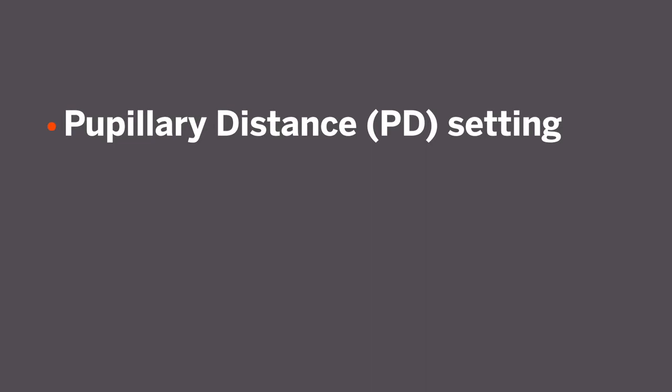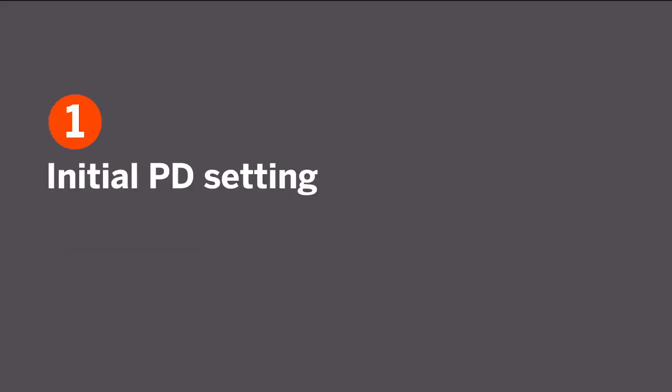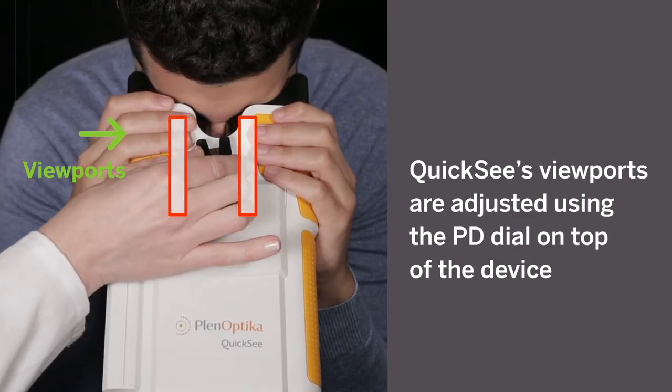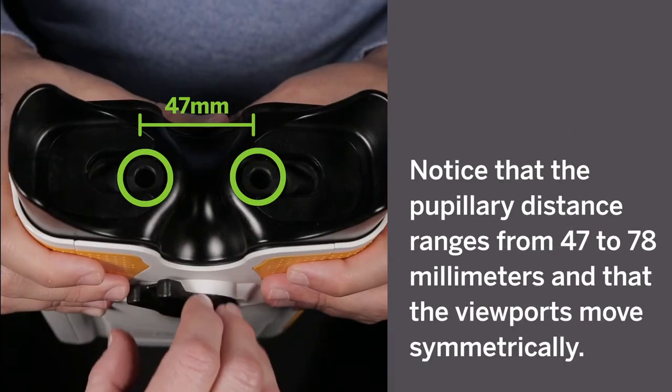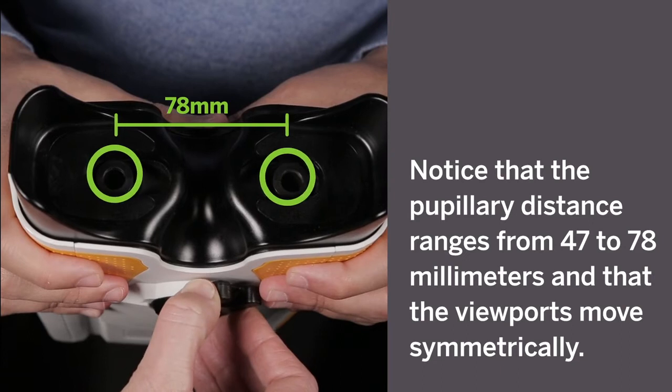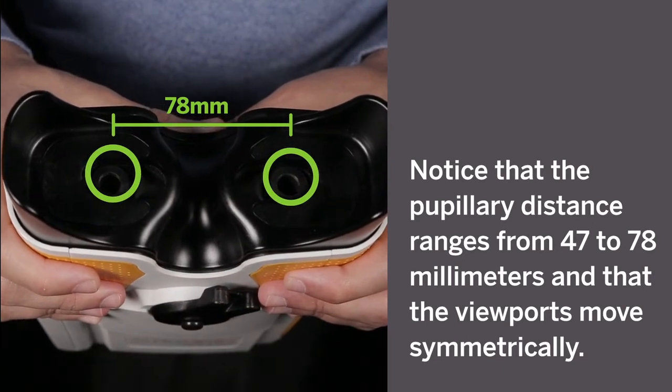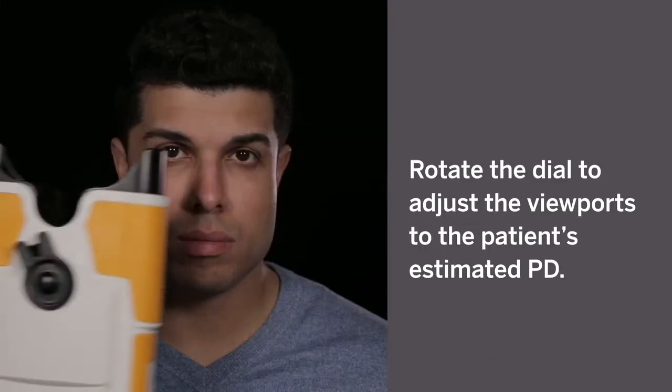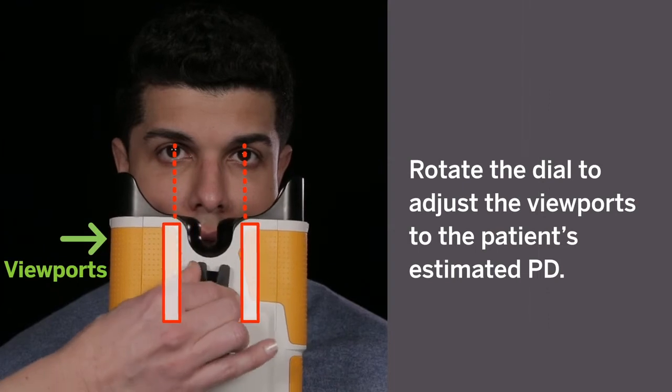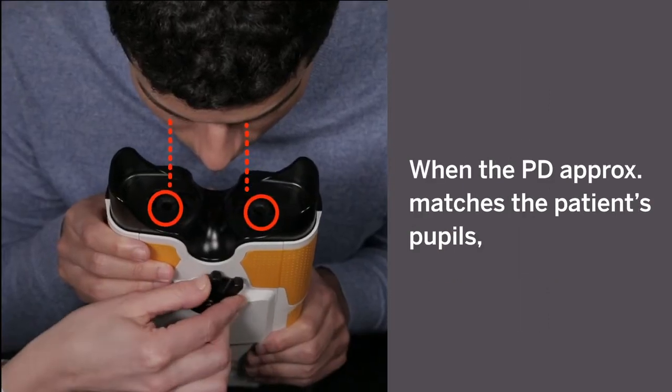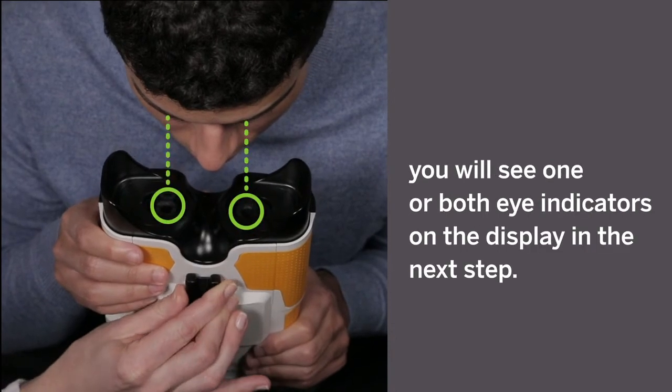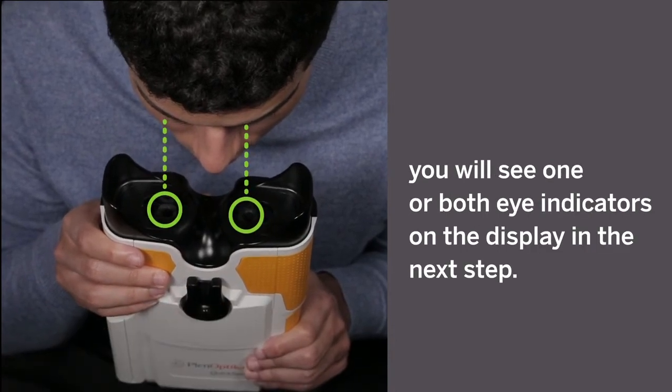Solutions include pupillary distance setting, seating, leveling, and fine-tuning. First, initial PD setting. QuickSee's viewports are adjusted using the PD dial on top of the device. Notice that the pupillary distance ranges from 47 to 78 millimeters and that viewports move symmetrically. Rotate the dial to adjust the viewports to the patient's estimated PD. When the PD approximately matches the patient's pupils, you will see one or both eye indicators on the display in the next step.